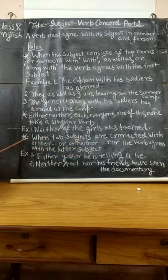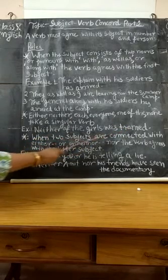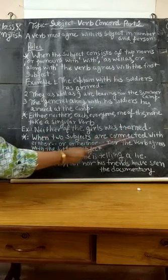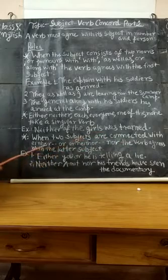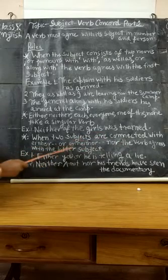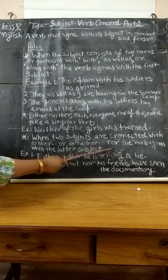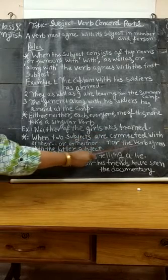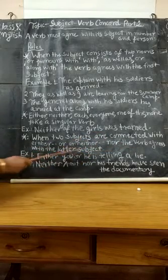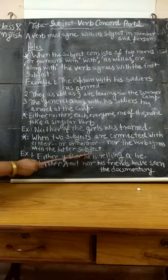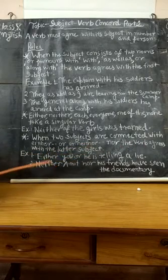Third rule: when two subjects are connected with 'either...or' or 'neither...nor,' the verb agrees with the later subject — that is, the second subject.